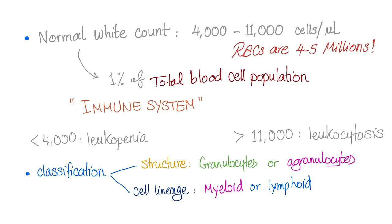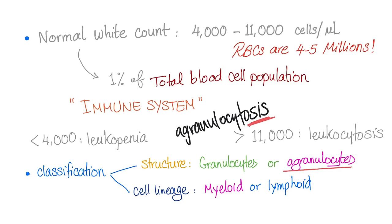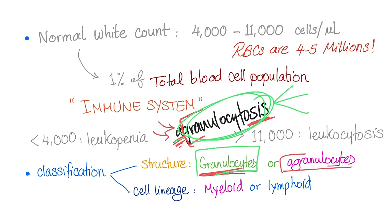There is a condition called agranulocytosis. Students get confused — does it mean the agranulocytes are increased, or that granulocytes are nonexistent? Indeed, agranulocytosis means fewer granulocytes in your blood. Granulocytes — neutrophils, basophils, eosinophils — are absent or decreased in your blood. Basically, agranulocytosis is essentially neutropenia.